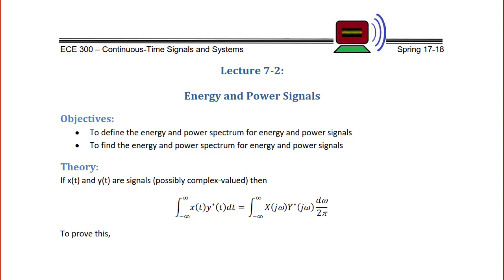If x(t) and y(t) are signals, possibly complex valued, then the integral from negative infinity to infinity of x(t) y-conjugate(t) dt is equal to the integral from negative infinity to infinity of X(jω) Y-conjugate(jω) dω over 2π. Note that X(jω) is the Fourier transform of x(t) and Y(jω) is the Fourier transform of y(t). Sometimes in the lecture you will see X(ω) and sometimes X(jω) — those are equivalent; the j is sometimes left off.